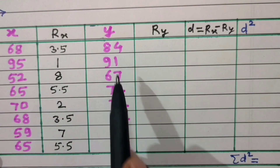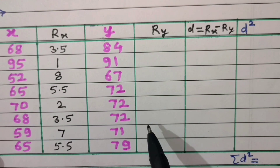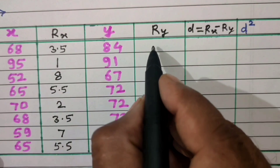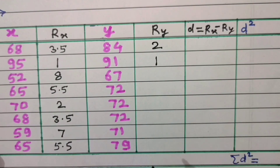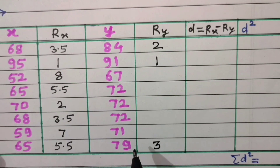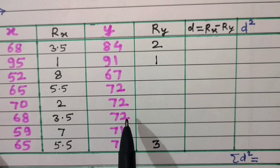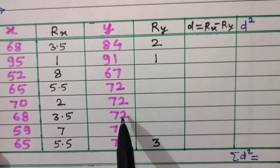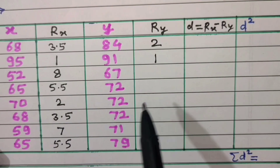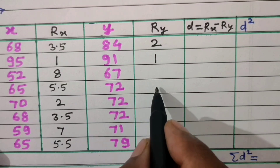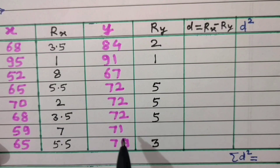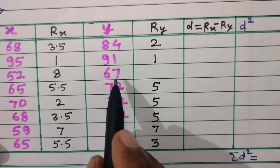For variable y, the largest is 91 — rank 1. Then 84 — rank 2, then 79 — rank 3. Then 72 is repeated 3 times, occupying ranks 4, 5, and 6; their average is 5. So each 72 gets rank 5. Then 71 gets rank 7 and 67 gets rank 8.